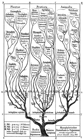The classification of living things into animals and plants is an ancient one. Aristotle classified animal species in his History of Animals, while his pupil Theophrastus (c. 371–287 BC) wrote a parallel work, the Historia Plantarum, on plants.